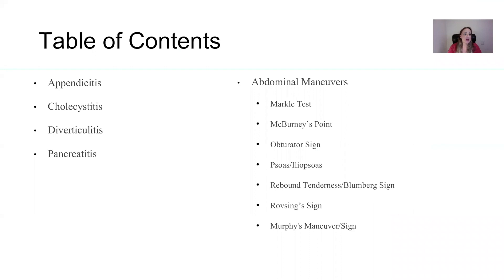We will be reviewing appendicitis, cholecystitis, diverticulitis, pancreatitis, and we have to talk about abdominal maneuvers. We have to talk about Markle test, McBurney's point, obturator sign, psoas and iliopsoas, rebound tenderness also known as Bloomberg sign, Robson sign, and the Murphy's maneuver or sign.